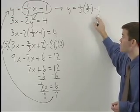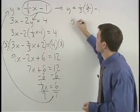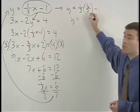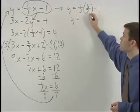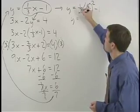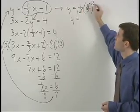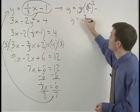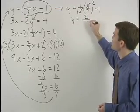Simplifying the right side of this equation, we have 1-third times 6-sevenths. So we can cross-cancel the 6 and the 3 to 2 and 1. We have 1 times 2, which is 2, and 1 times 7, which is 7.